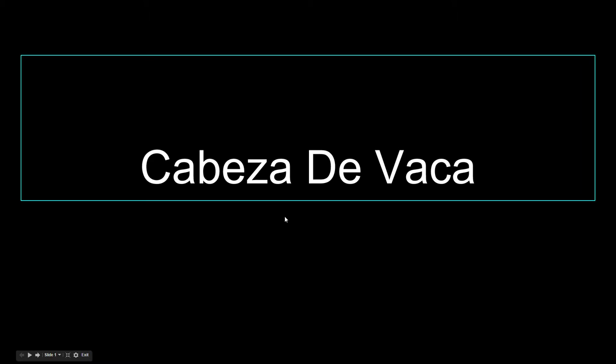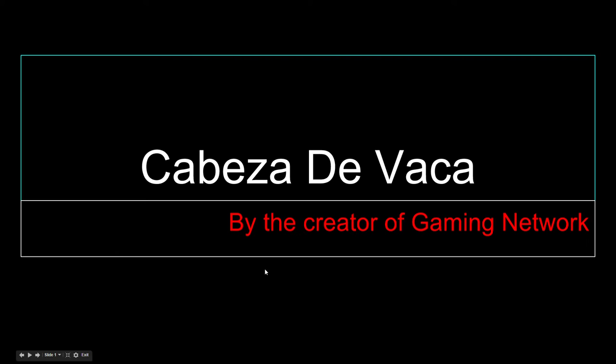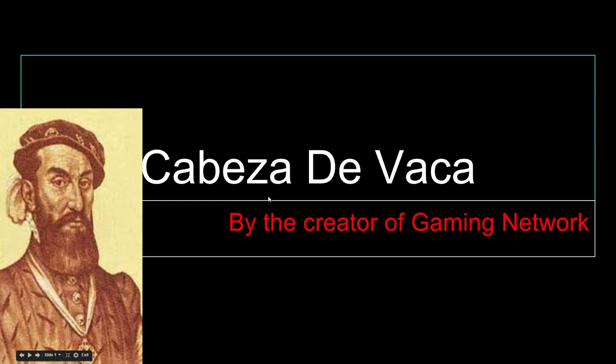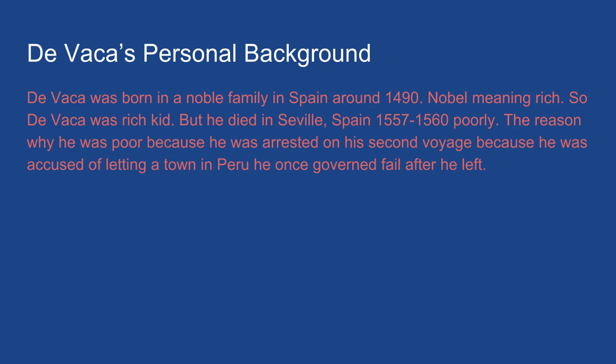His name is Cabeza de Vaca — and that's a drawing of him, not exactly a picture, because they did not have cameras in the 1500s, so it's like a painting. His personal background: he was born into a noble family in Spain around 1490. We don't have complete records of his exact birth date, but being noble means he was rich — so he was a rich kid.